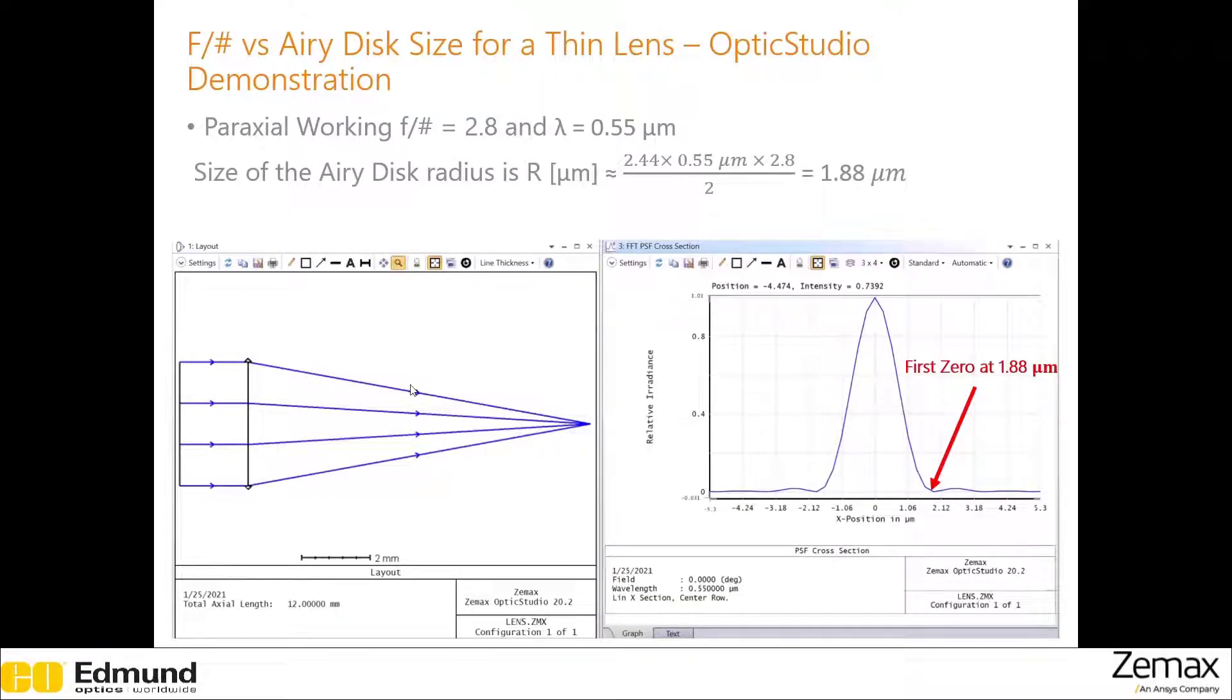A simple positive thin lens was designed in OpticStudio to demonstrate how the f-number affects the size of the Airy disc.